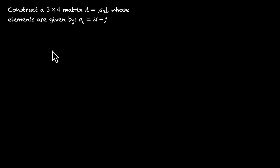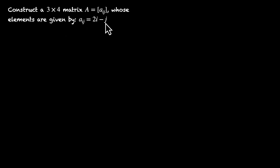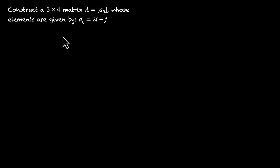Let's try one more. Construct a 3x4 matrix A whose elements are given by Aij equals 2i minus j. For this matrix, we'll have 3 times 4, that's 12 elements. Pause the video and try this out.